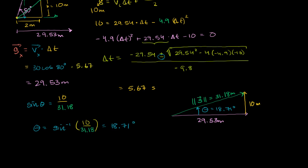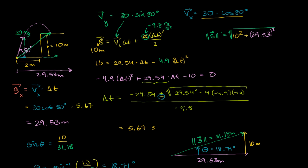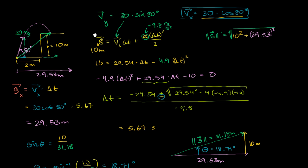The horizontal component is easy, because we already know that the horizontal component of its velocity is this value right over here — 30 cosine of 80 degrees — and that's not going to change at any point in time. So this is going to be the horizontal component of the projectile's velocity when it lands.